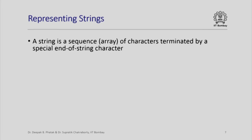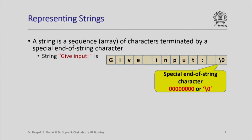How do we represent strings in a computer? A string is really a sequence or array of characters that is terminated by a special character called the end-of-string character. For example, the string 'Give input: ' has each character stored in a box, including the blank space, and at the end there is a special end-of-string character which is the all-zero unsigned 8-bit integer, represented in programming as backslash-zero.